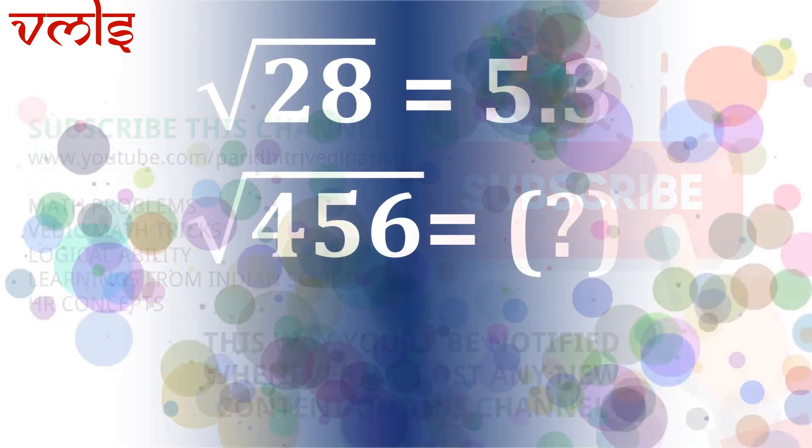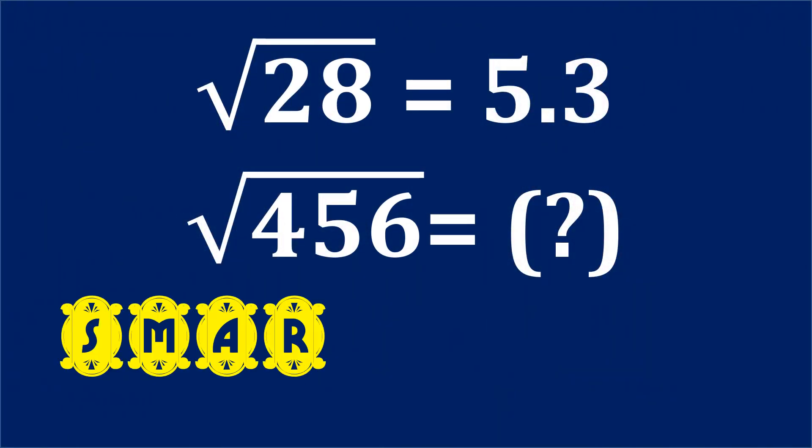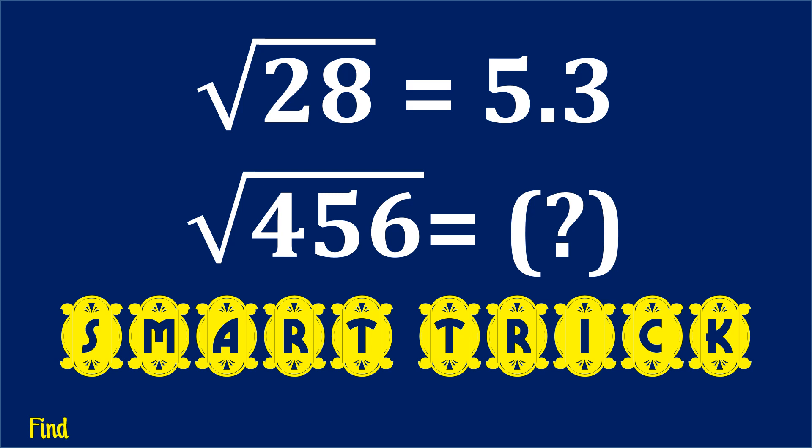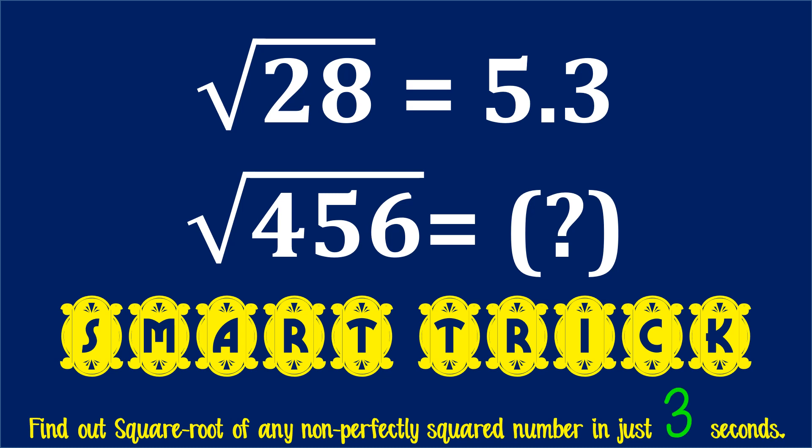Once again focusing back on the question: √28 = 5.3, what is √456? This video talks about the smart trick of finding the square root of non-perfectly squared numbers. When I talk about 25, then √25 = 5 - that's a perfectly squared number. But when I talk about √28, then 28 does not have an integer as its square root, so that is a non-perfectly squared number.